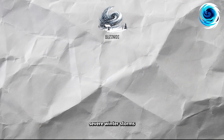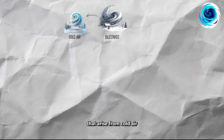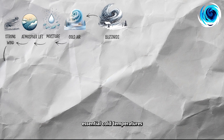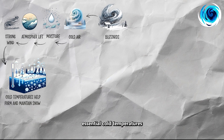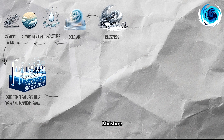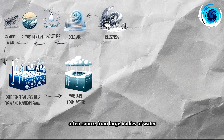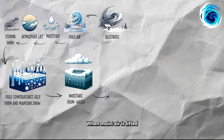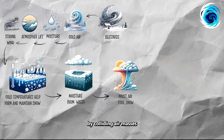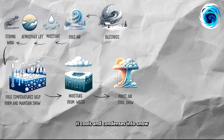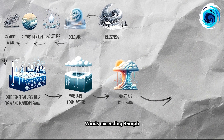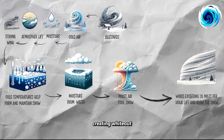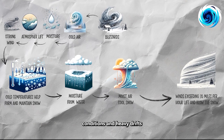Blizzards are severe winter storms that arise from cold air, moisture, atmospheric lift, and strong winds. Essential cold temperatures help form and maintain snow. Moisture, often sourced from large bodies of water, feeds the formation of snow clouds. When moist air is lifted by colliding air masses with different temperatures, it cools and condenses into snow. Winds exceeding 35 miles per hour lift and blow the snow, creating whiteout conditions and heavy drifts.